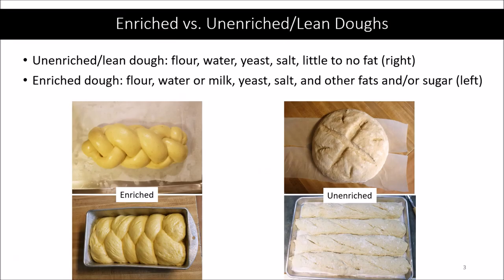In the last video I mainly talked about doughs made from flour, water, yeast, and salt — the basic ingredients for a yeasted dough — which would make up what we call an unenriched or lean dough. These unenriched doughs can have a little bit of fat but usually just a minimal amount. On the contrary, an enriched dough has those same four ingredients, sometimes with milk replacing water, and quite a bit of fat and/or sugar. That fat can be oil, butter, or egg yolks, and the sugar can be simple table sugar.